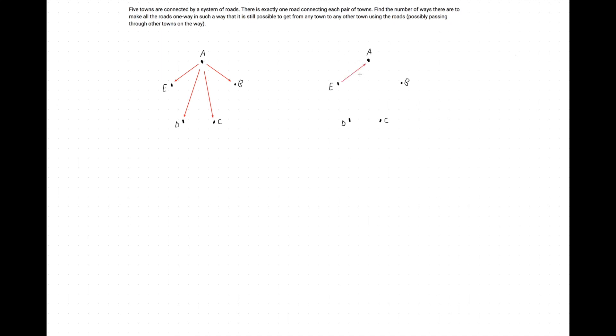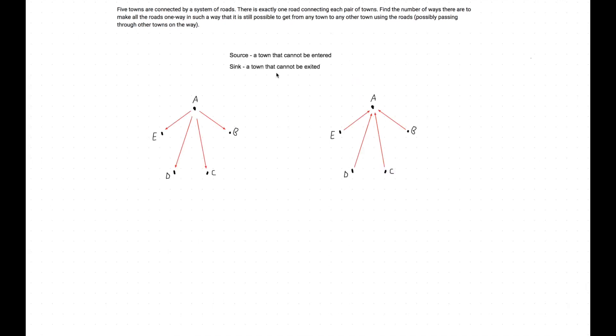So any configuration where one town has all roads coming out of it automatically fails. In graph theory, town A would be called a source. Likewise, if there was no way out of a town, you can't get from town A to town B, and a configuration where you have one town with no way out automatically fails as well. In graph theory, town A would be called a sink. I've put the definitions on the whiteboard to refer to throughout the video.